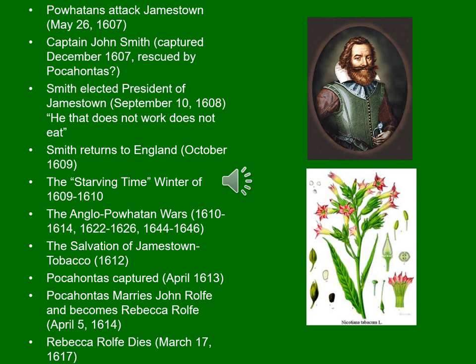One story Smith told was that he was only rescued from execution by the Poetans through the intervention of Pocahontas, the daughter of the chief of the tribe. In 1607, Pocahontas would have been 11 or 12 years old. Smith has claimed this ever afterwards, and unlike the Disney version there was never any romantic entanglement between John Smith and Pocahontas.